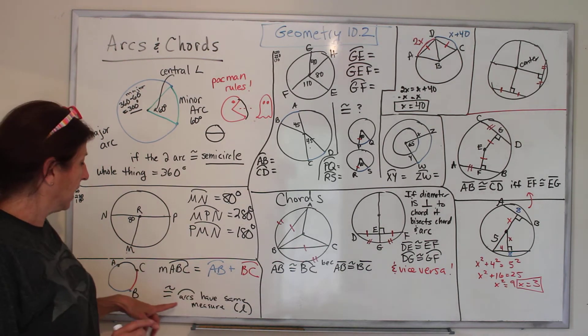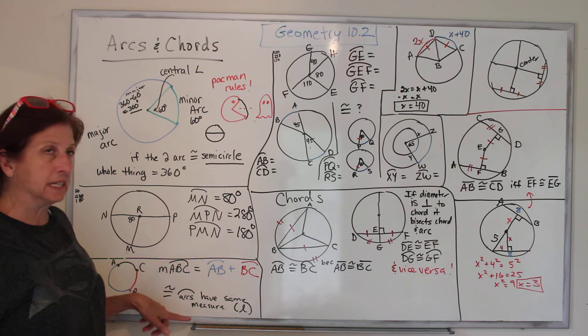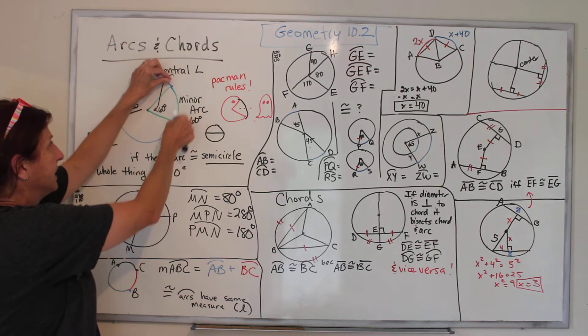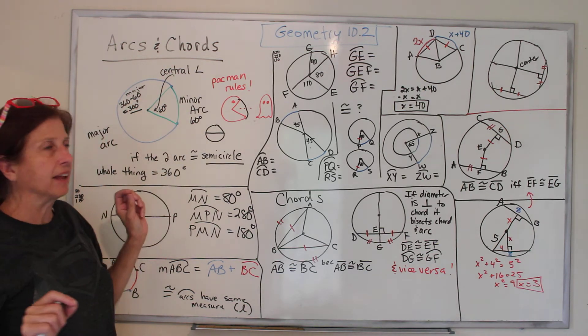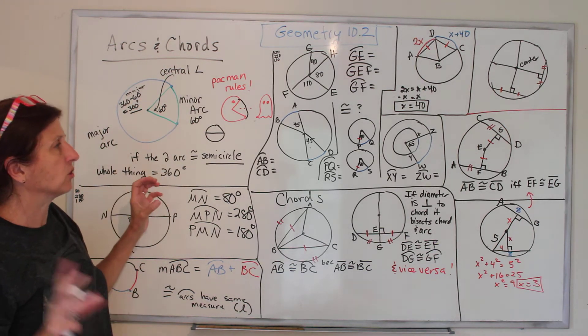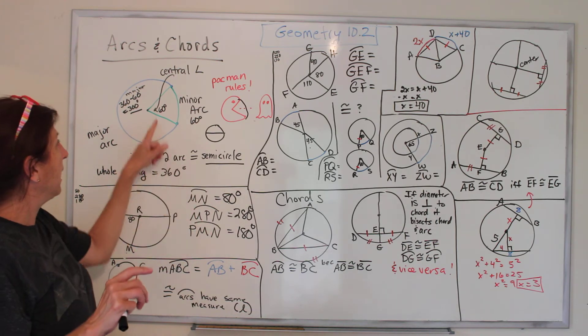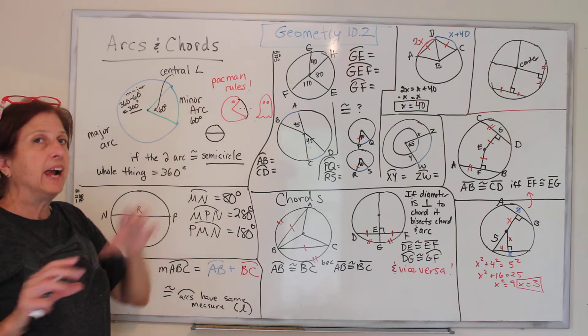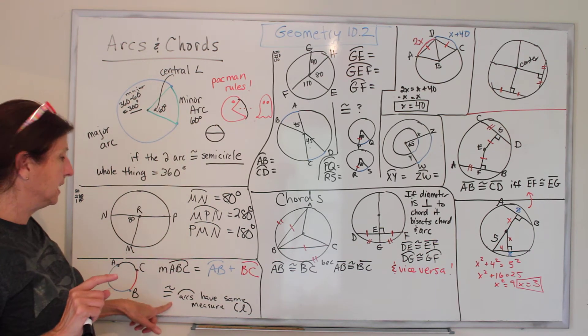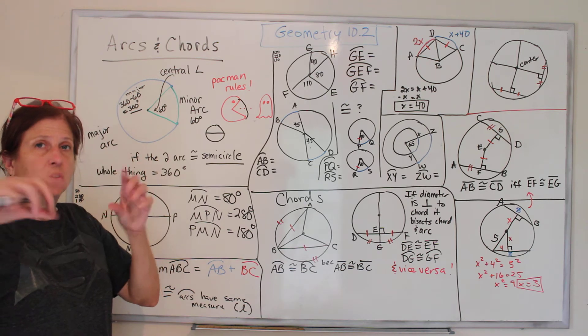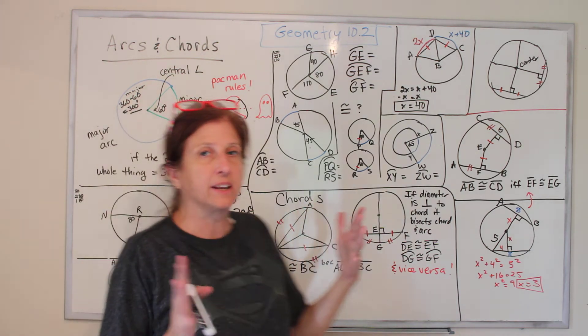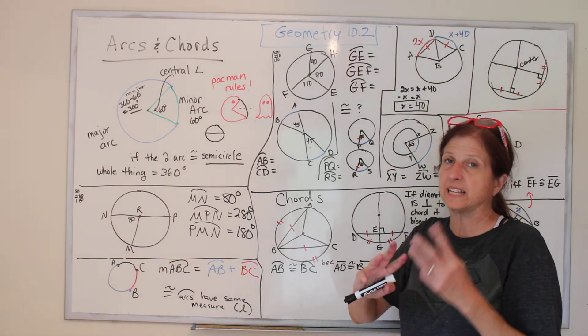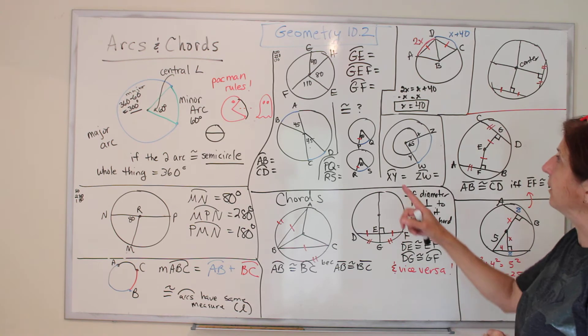Arc ABC is equal to AB plus BC. Then the other thing, if arcs are congruent, then they have to have the same measure. If you were measuring them with a measuring tape around, they have to have the same length. So if you have a big circle and a little circle, and the degrees are the same, the arcs are not considered congruent because the big circle would have a longer arc. They have to be both to be congruent.